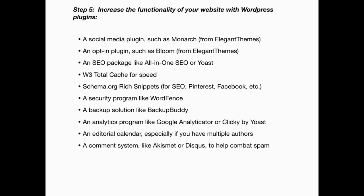Step five: increase the functionality of your website with plugins. I recommend a social media plugin, an opt-in plugin such as Bloom that makes it easy to incorporate an opt-in box on your blog, an SEO package, a W3 Total Cache to improve speed, a security program like WordFence, and a backup solution like Backup Buddy.